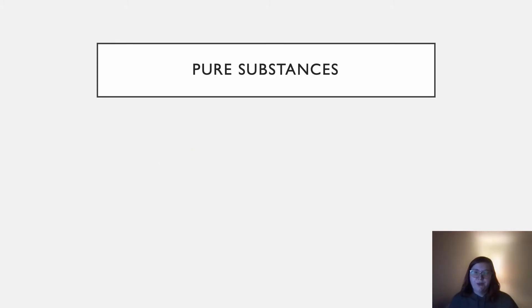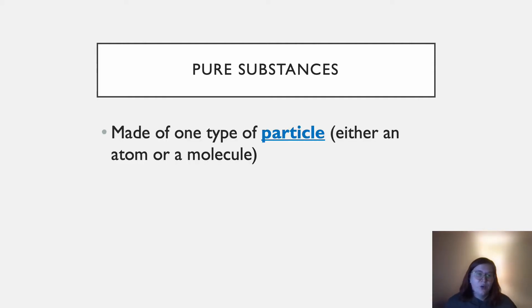Okay, we're going to start with pure substances. You'll know something is a pure substance if it's only made of one type of particle. And that particle can be an atom or a molecule in a pure substance. And I'm going to go into what the differences are in just a minute.